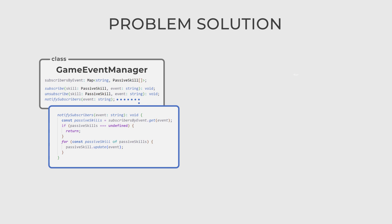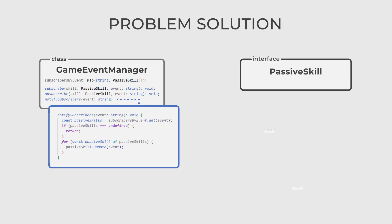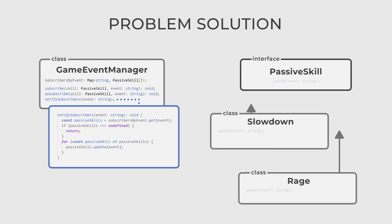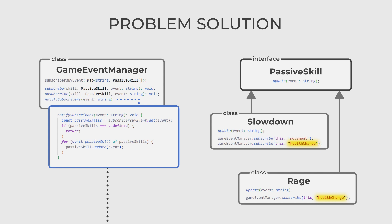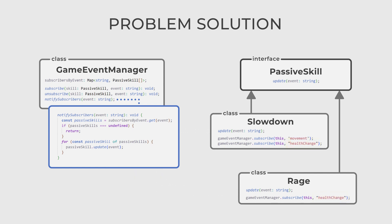Then, let's create the PassiveSkill interface and concrete PassiveSkill classes, which implement one single method — Update. Any concrete PassiveSkill can subscribe to any event that GameEventManager emits. When the notifySubscribers method is called with the event, the GameEventManager will call the Update method for all subscribers listening to that concrete event. Thus, each PassiveSkill will know exactly when it should work.